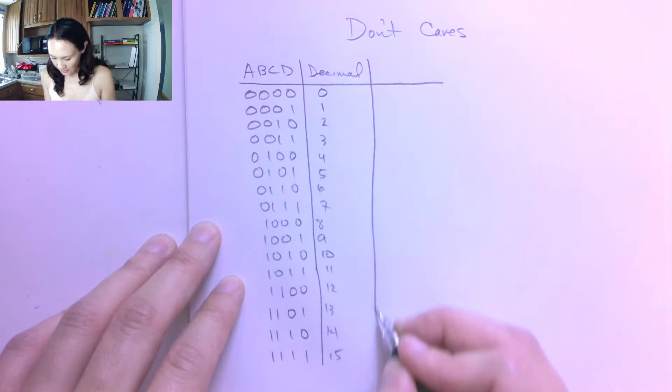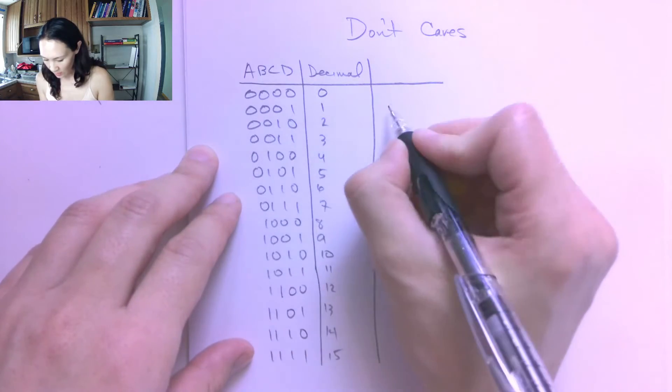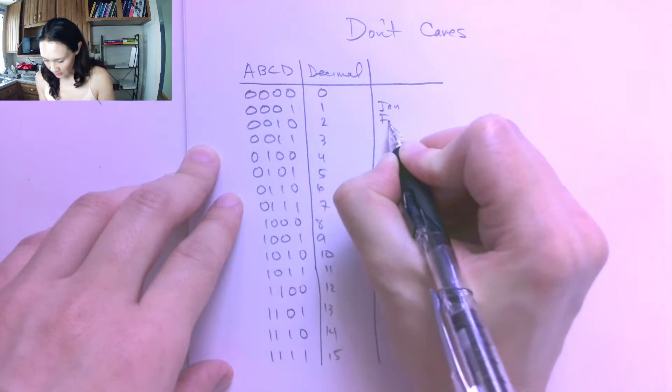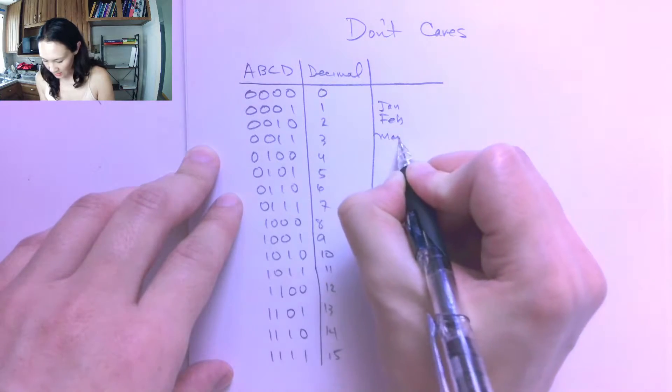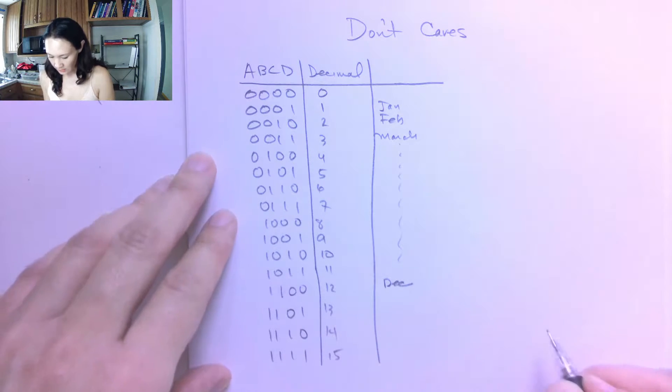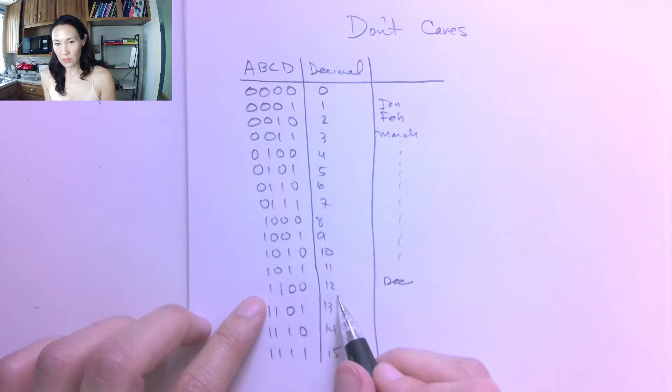The example that I thought would be interesting was suppose we wanted to design a system that encoded our birthdays in decimal. So your birth month is going to be sometime between January and December. That means we're going to need number 1 and we're going to need 2, 3, and on and on until December is 12.